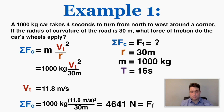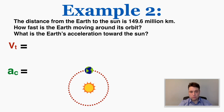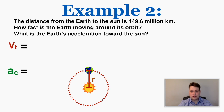Here's example 2. The distance from the Earth to the Sun is 149.6 million kilometers. How fast is the Earth moving around its orbit? What is the Earth's acceleration toward the Sun? This problem gives us context clues — we're finding tangential velocity and centripetal acceleration, and we're given the radius of Earth's circular path, since the distance from Earth to Sun equals the radius of Earth's orbit.